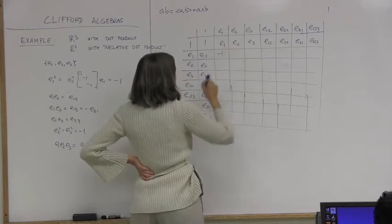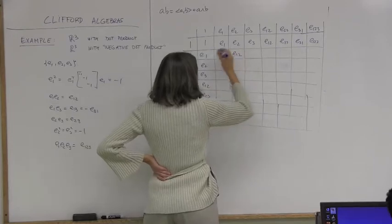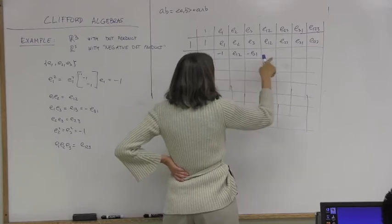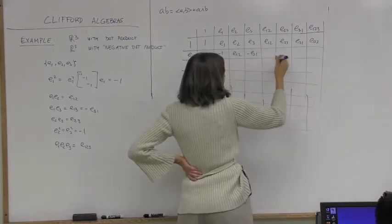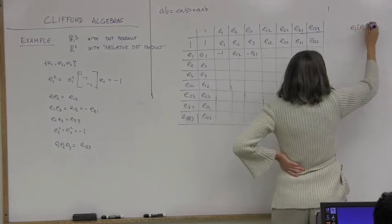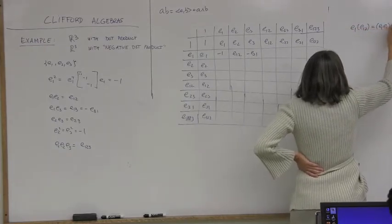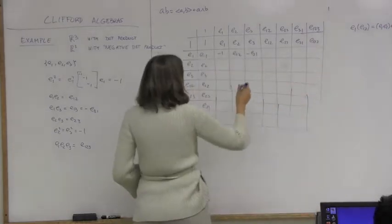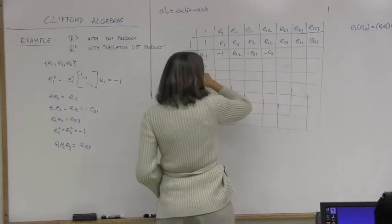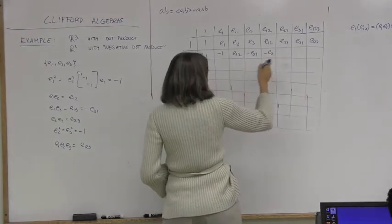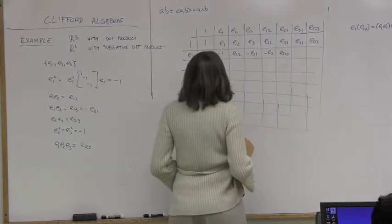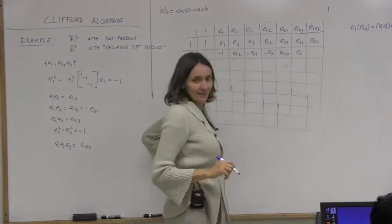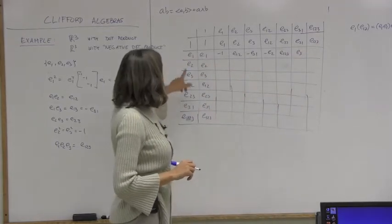E1² = −1. E1·E2 = E12. E1·E3 = −E31. E1·E12 = E1·E1·E2 = (−1)·E2 = −E2. E1·E23 = E123. E1·E31: since E1·E3·E1 = −E1·E1·E3 = (−1)·(−1)·E3, giving E3 — but we need to be careful with signs from anti-symmetry and from E1² = −1.